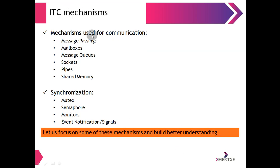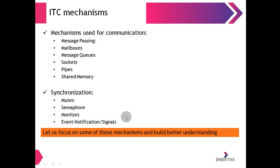ITC mechanisms used for communication include message passing, mailboxes, message queues, sockets, pipes, and shared memory. In case of synchronization, the mechanisms include mutex, semaphore, monitors, and event notification sequences. Let us now focus on some of these mechanisms and build a better understanding.